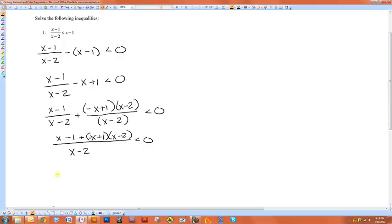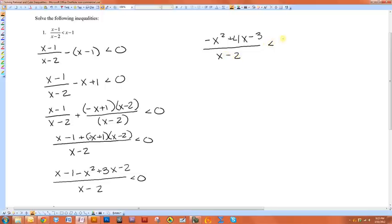Now let's clean this up. x minus 1 minus x squared plus 3x minus 2 over x minus 2 is less than zero. So that gives me negative x squared plus 4x minus 3 over x minus 2 is less than zero.